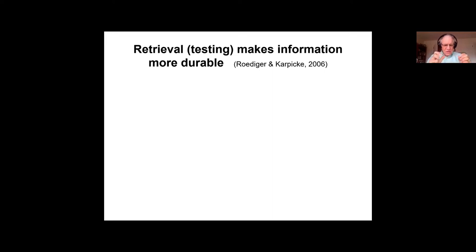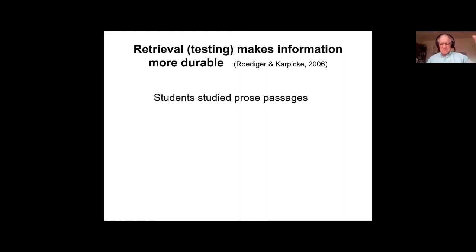The direct effect of testing is that retrieval makes information more durable — it alters and modifies memory. This is different from how educators and psychologists had long thought about testing. The old idea was that a test is like a dipstick in the head: you pull it out, see how much people remember, and it assesses what you know — a neutral event. We now know that retrieval is not at all a neutral event; it alters and changes the memory trace.